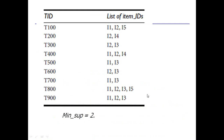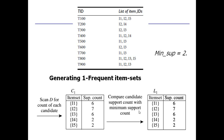Now let us see an example. Consider a transaction database with nine total transactions and items listed in the table. Minimum support is equal to two, which is 2/9 ≈ 22%. In the Apriori algorithm we scan the entire database and count each candidate. By scanning we find there are five distinct items: I1, I2, I3, I4, and I5.